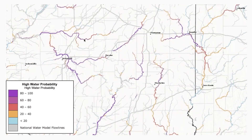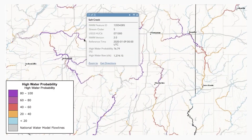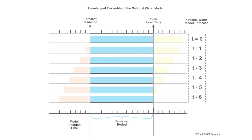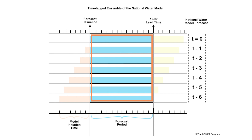Clicking a location reveals additional details about its expected conditions, including the estimated high water flow threshold for that reach and the probability of exceeding that threshold. The period of interest is defined as the next 12 hours.